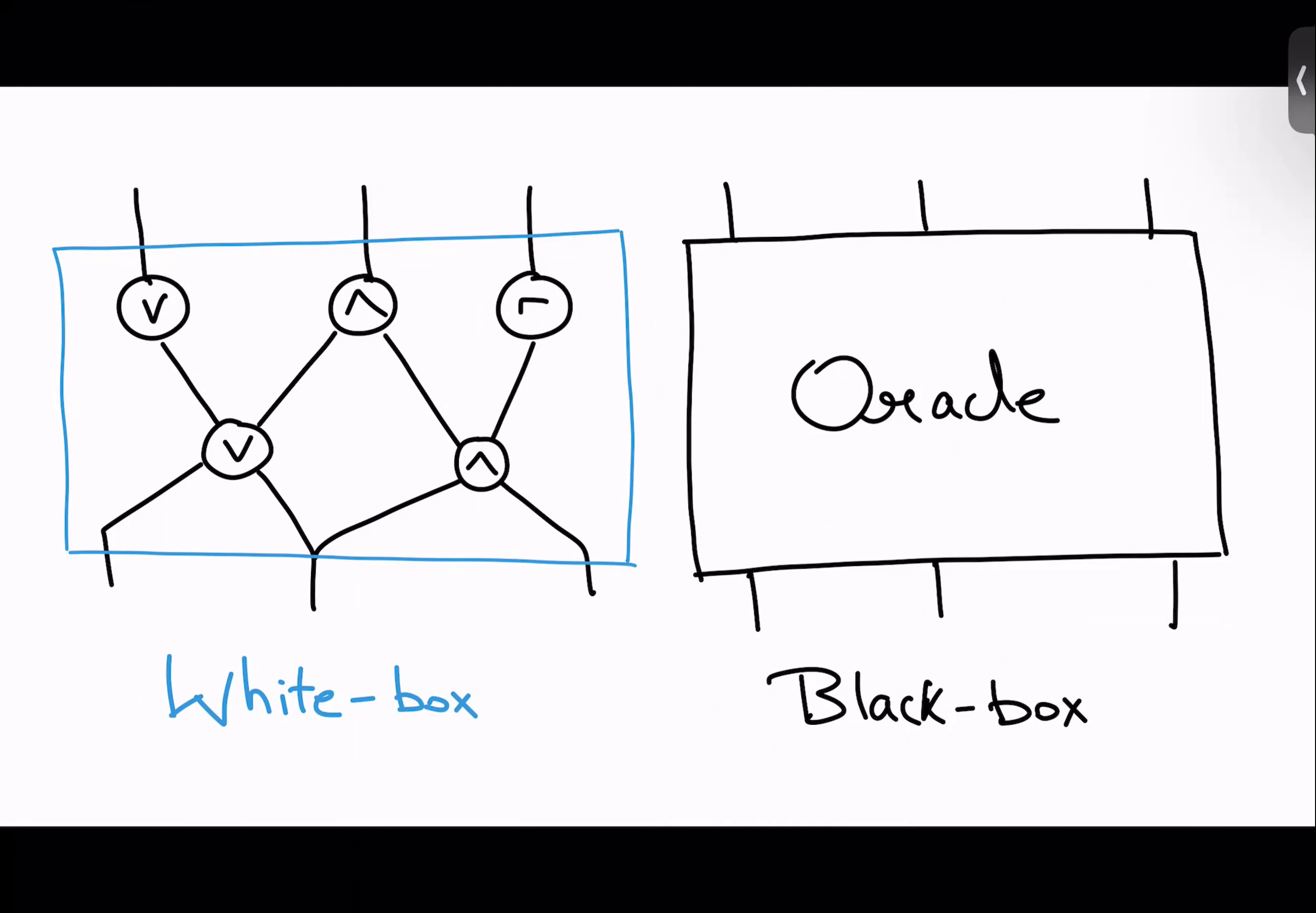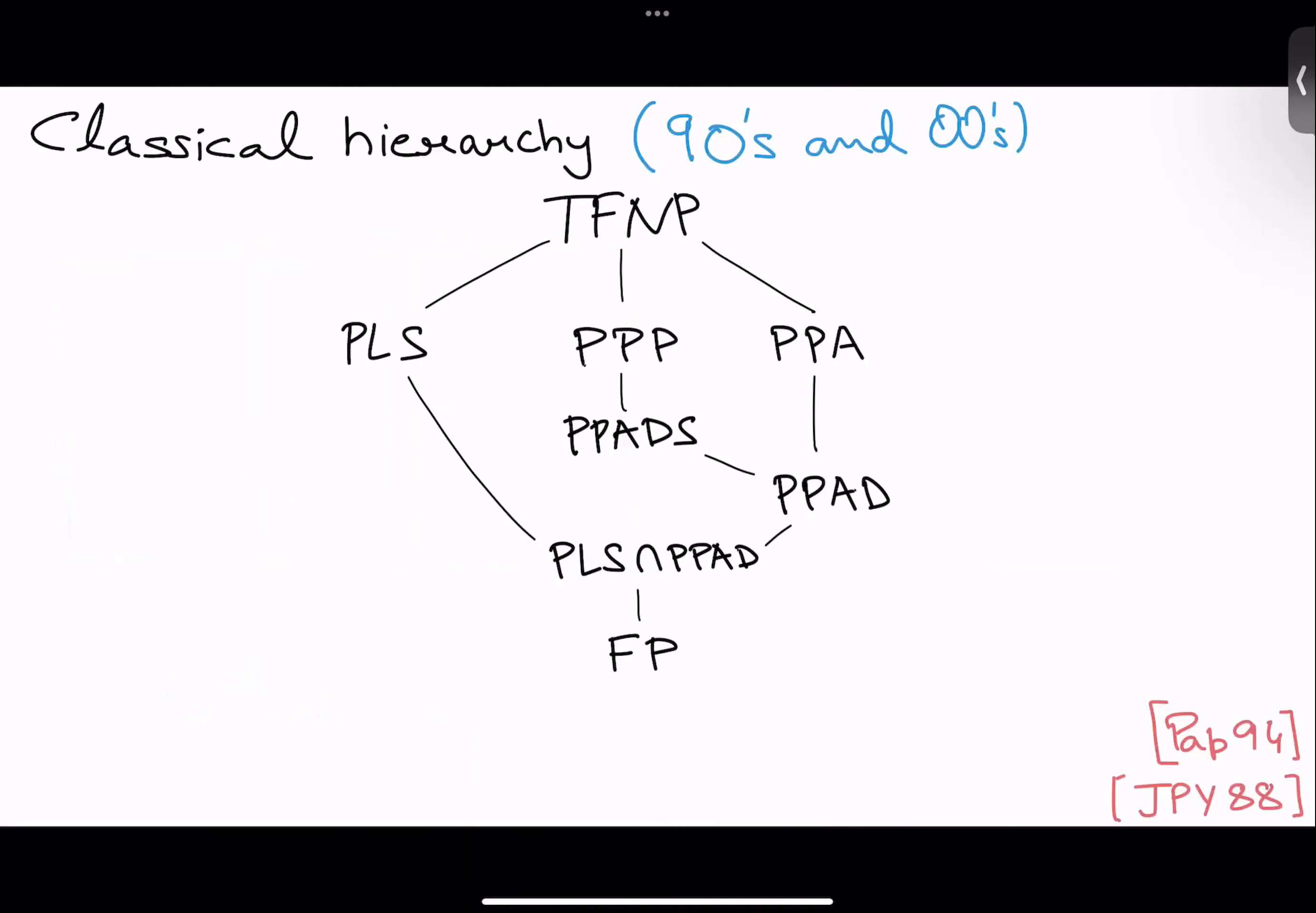And also another reduction which maps the output generated by your solved problem B, back to a valid output for problem A. Now, the key thing here is that normally these problems are defined in the white-box model and the black-box model.